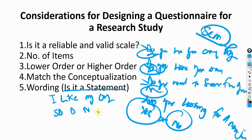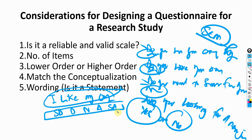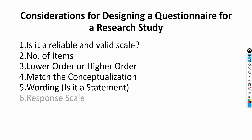And the response scale should be: strongly disagree, disagree, neutral, agree, strongly agree — a five-point Likert scale. This is a metric scale. When you have multiple items measuring a particular concept, such as organizational commitment, you can use them as a latent unobserved variable measured using a number of different items. So please be mindful about wording and response scale.